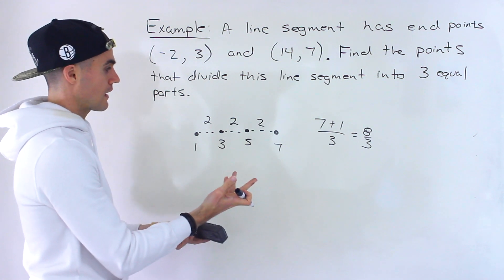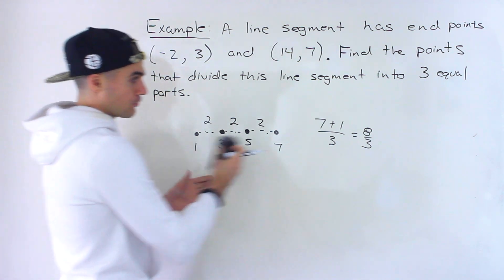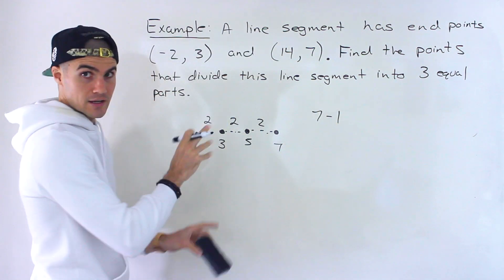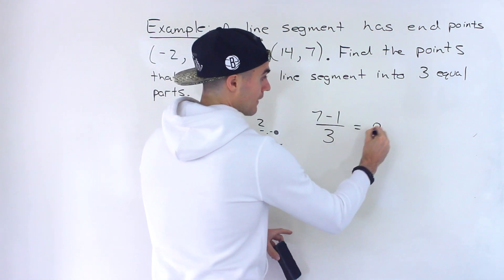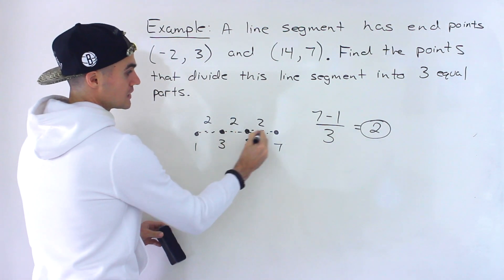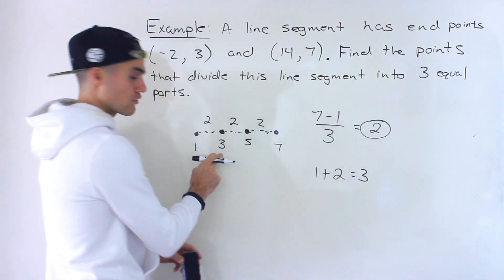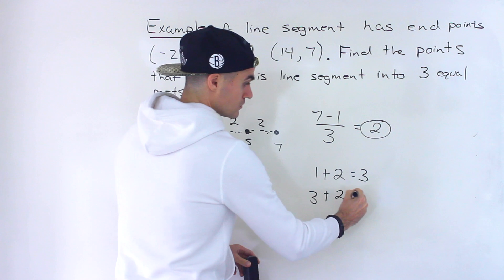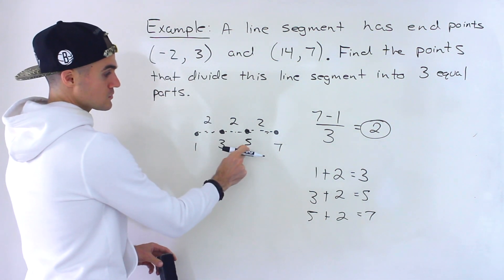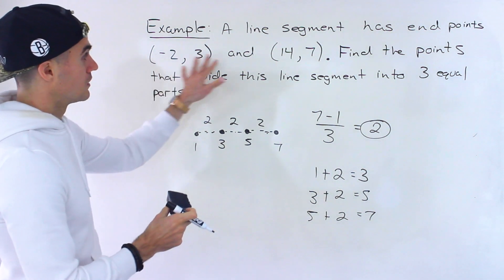So we can't do something like that. Before we were finding one midpoint; now we have to find two points that split it into three equal parts. The process is: first take the difference between 7 and 1, which is 6, then divide that by 3, giving us 2. This 2 represents the distance between each of the points. So we take endpoint 1 and add 2 to get 3, then add 2 to get 5, then add 2 to get 7. Or we can go the other way: 7 minus 2 gives 5, 5 minus 2 gives 3, 3 minus 2 gives 1.